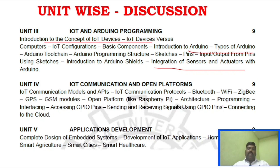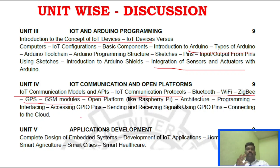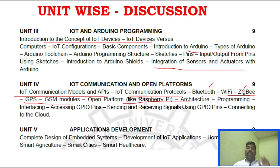Unit 4 questions are a bit harder to predict. IoT communication models and APIs are important. Similarly, communication protocols — Bluetooth, Wi-Fi, Zigbee, GPS, GSM — these Part B topics are very important. GPS and GSM are also very important. Raspberry Pi architecture is also a very important question in this unit.